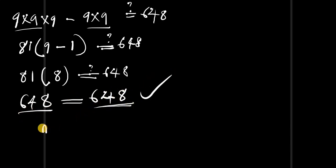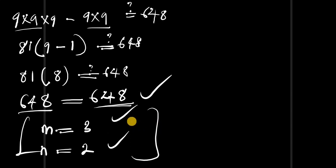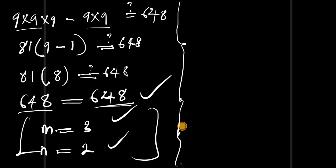So our values of m equals 3 and n equals 2 are perfectly correct. That's it for the video — thank you for watching. Please don't forget to subscribe, share this video with your friends, and drop a comment if you have any questions or alternative methods for solving this problem. Thank you and goodbye!